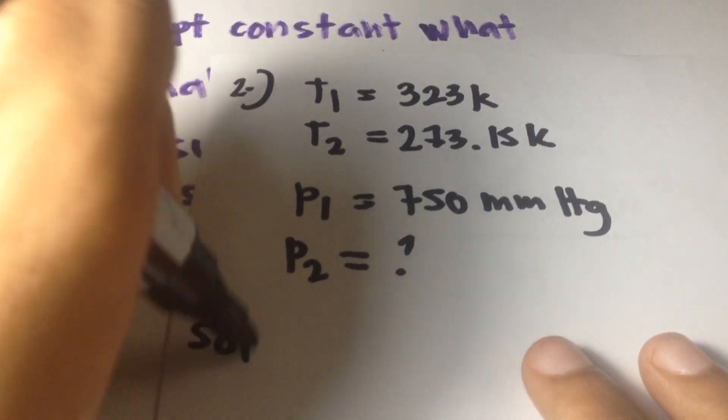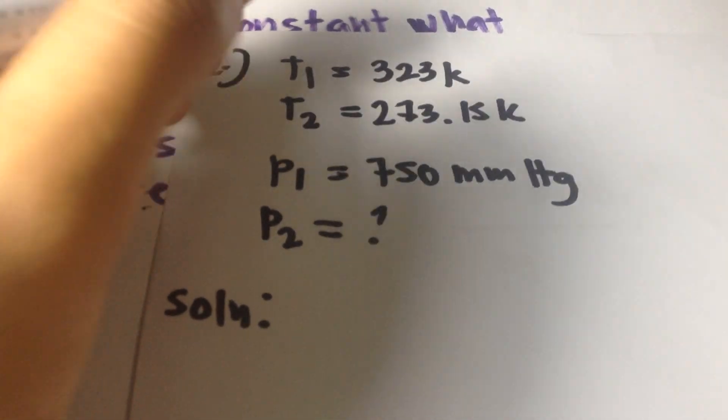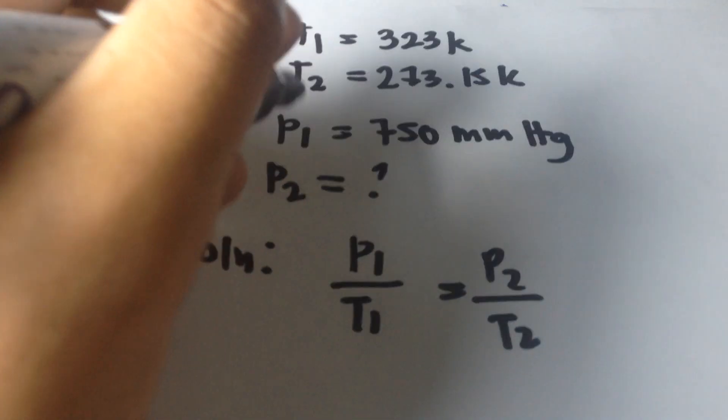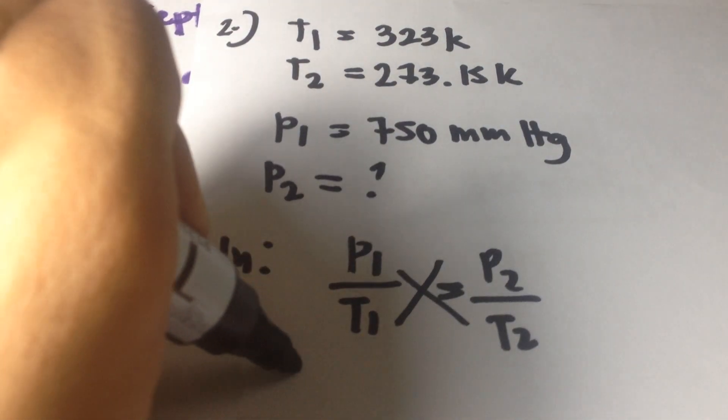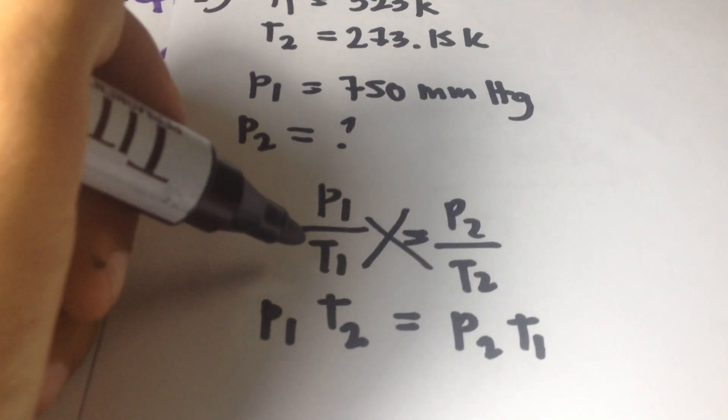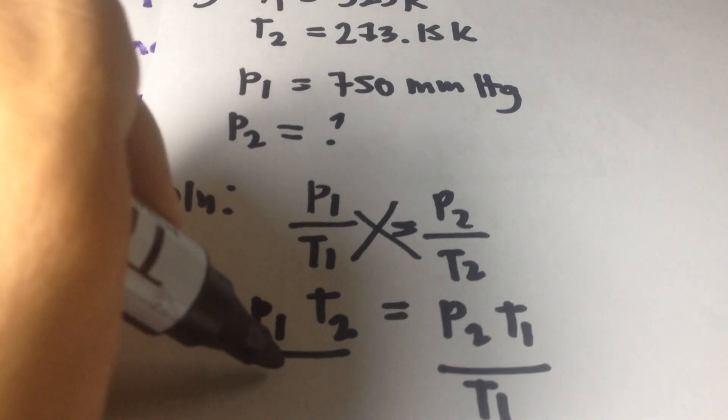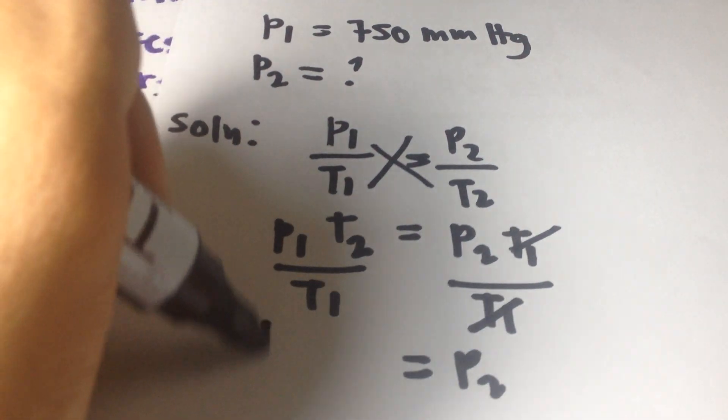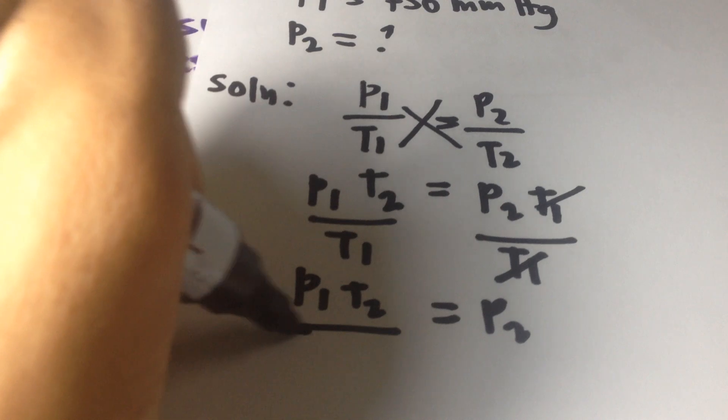Solution: we use again the formula P1 over T1 equals P2 over T2. Cross multiply: P1 times T2 equals P2 times T1. We need to get P2, so divide both sides by T1, cancel out T1. Pressure 2 equals P1 T2 over T1.